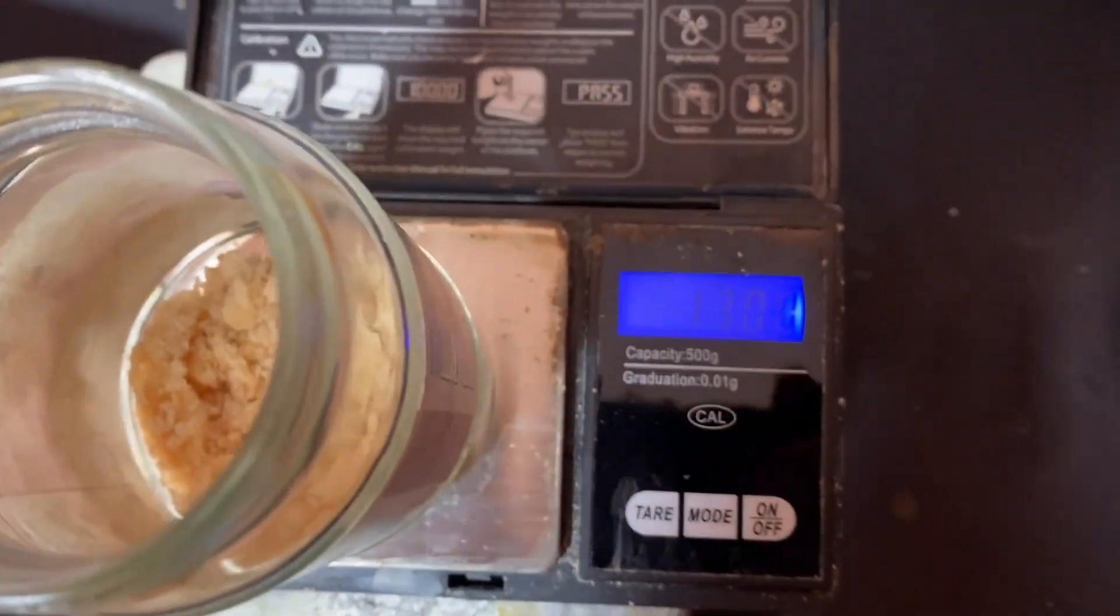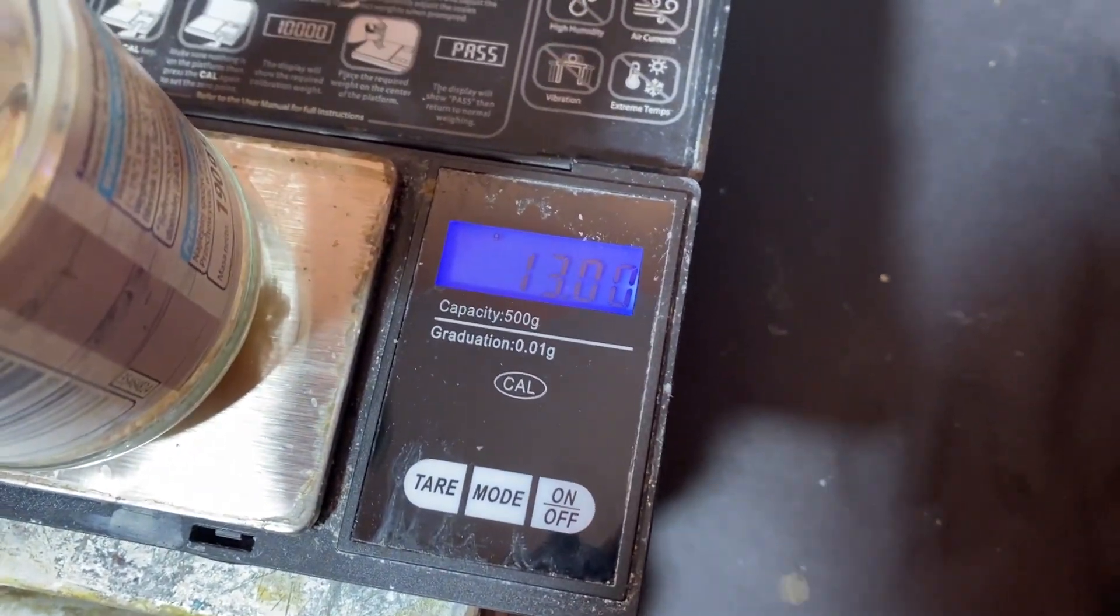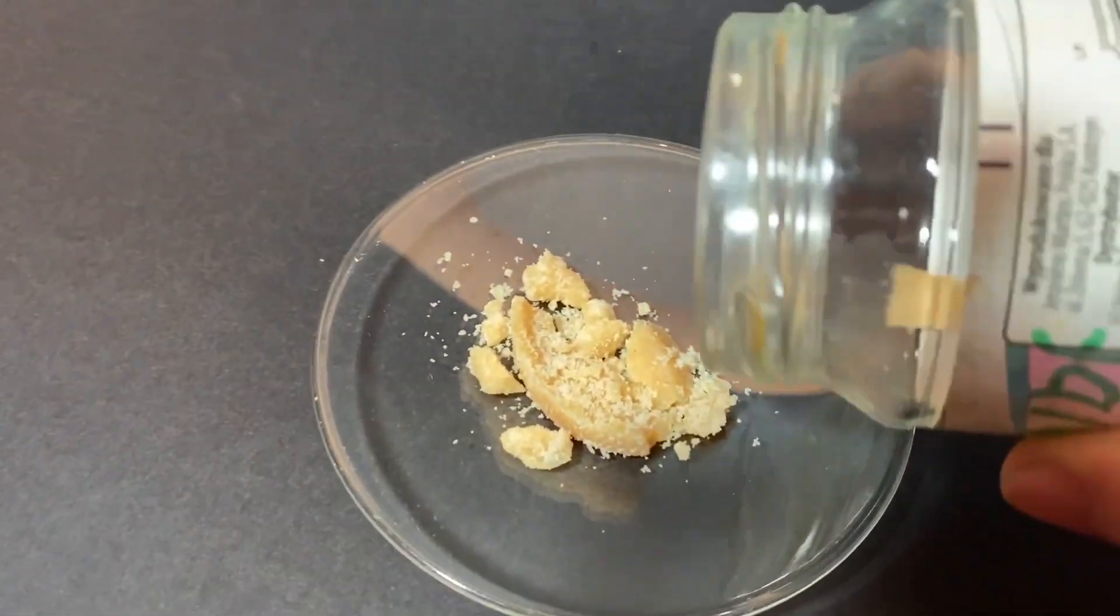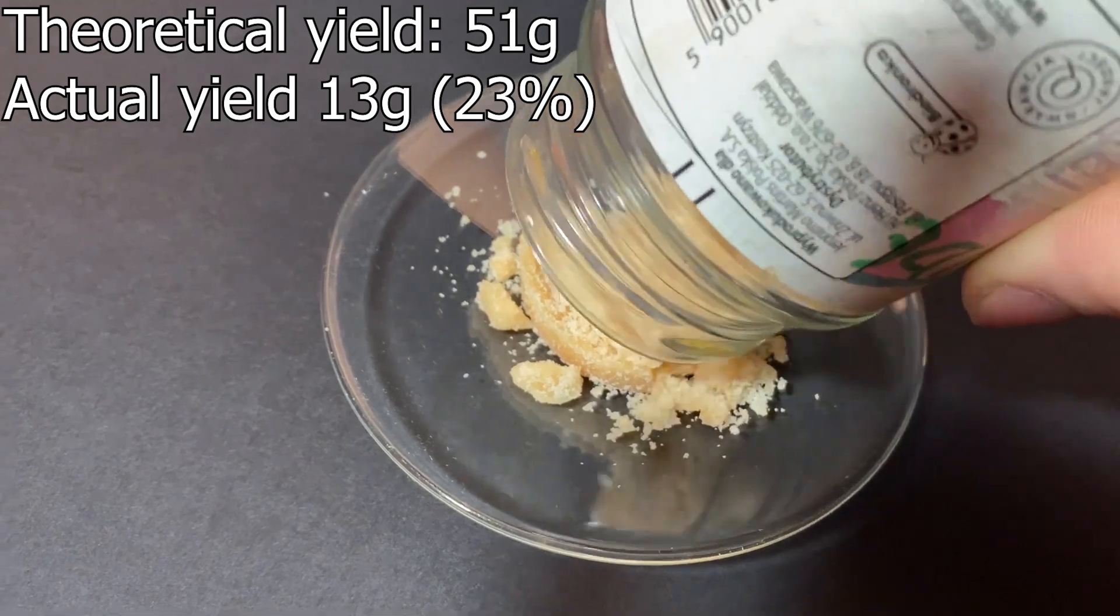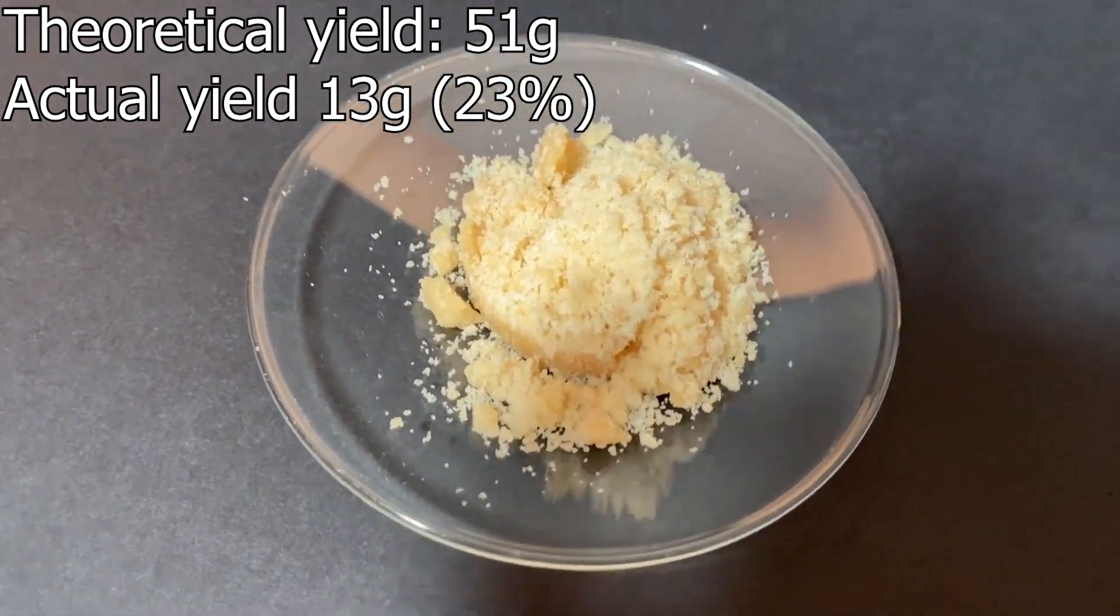So our yield is around 13 grams of brown acetamide. The theoretical yield of acetamide is 55 grams, which gives us a yield of a whopping 23%. Yeah, when I got it into a calculator, it made me want to cry.